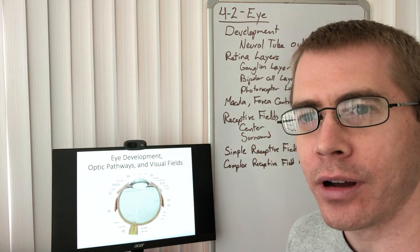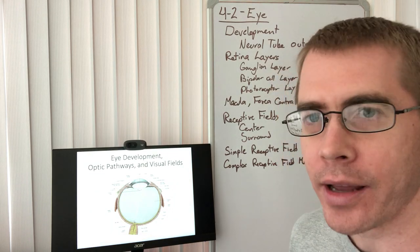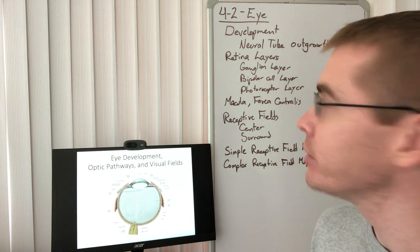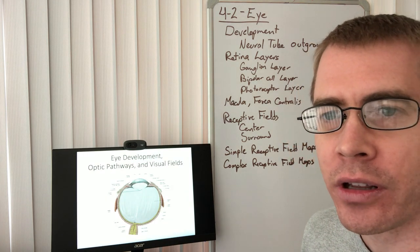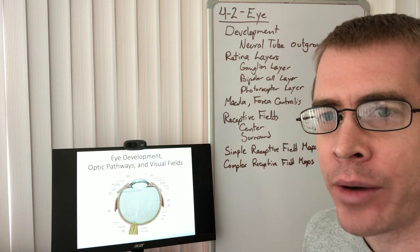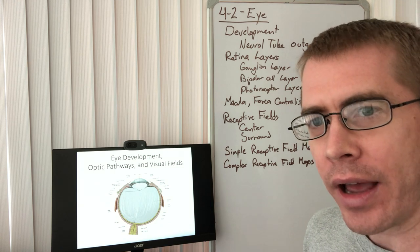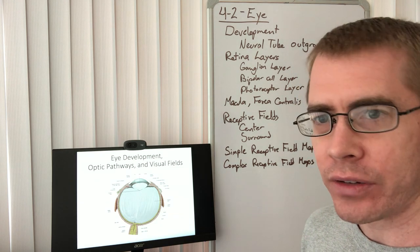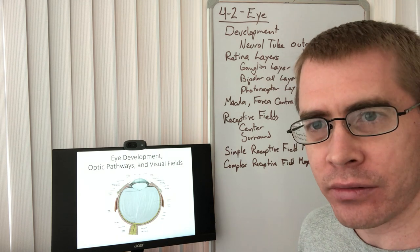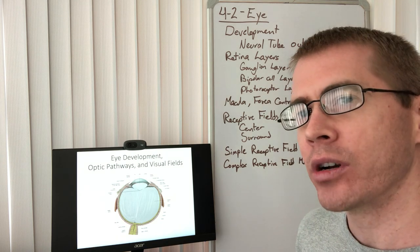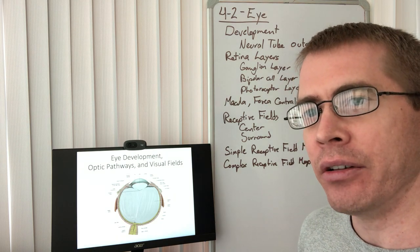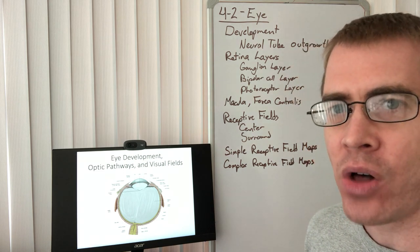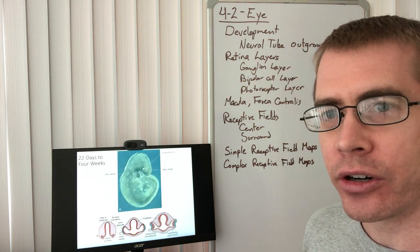Welcome to another thrilling episode of my anatomy channel. In this episode, episode 4-2, we're going to be talking about the eye. We've already talked about the orbit and some of the larger layers of the eye — the sclera, the choroid, the retinal layer. Now we're going to look at finer details related to the visual pathways and how visual processing occurs.